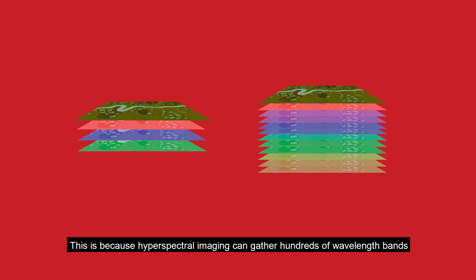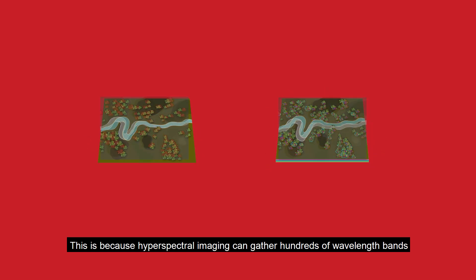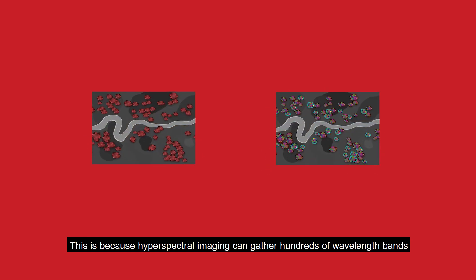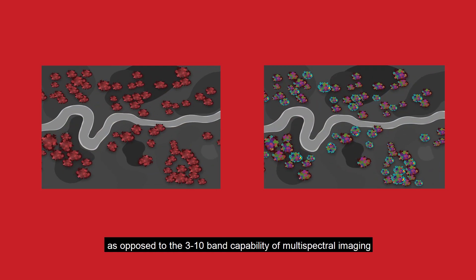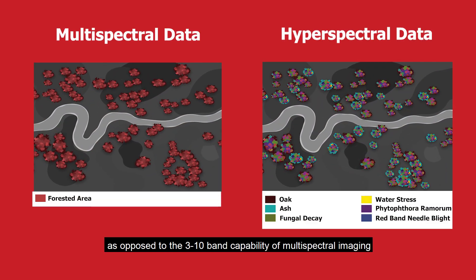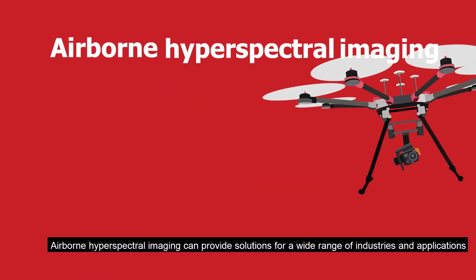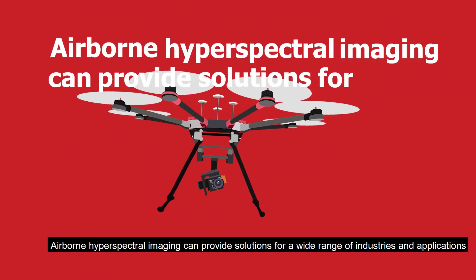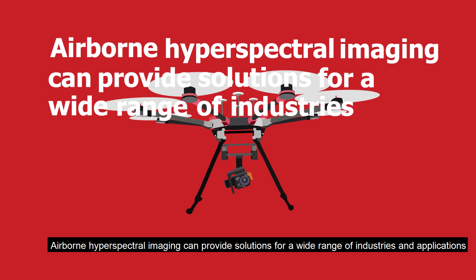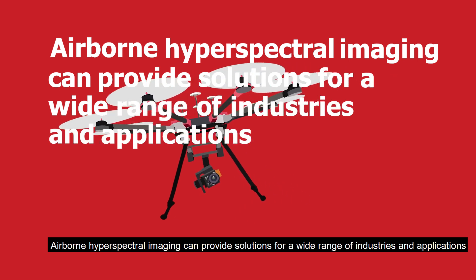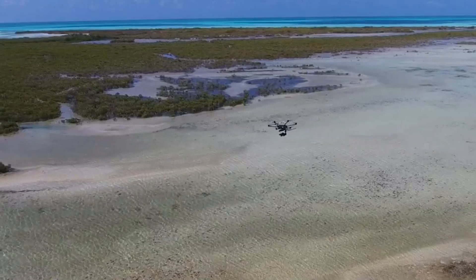This is because hyperspectral imaging can gather hundreds of wavelength bands, as opposed to the 3 to 10 band capability of multispectral imaging. Airborne hyperspectral imaging can provide solutions for a wide range of industries and applications.